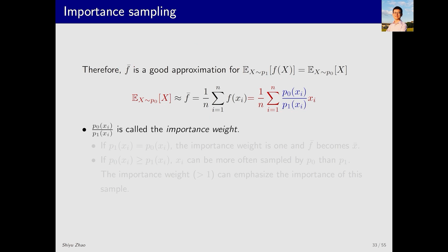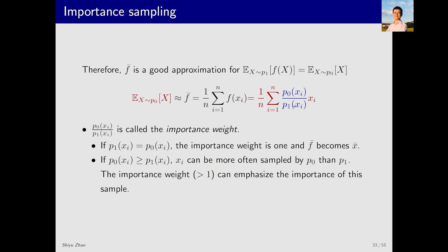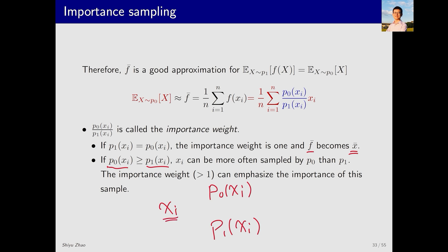If p0 is greater than p1 at some x_i, the importance weight becomes greater than one. Here is the intuitive explanation: if p0(x_i) is large, x_i has high probability under p0; but if p1(x_i) is small, x_i is rarely sampled under p1. Since we are trying to calculate the expectation under p0, we should give extra importance to x_i — it is rare under p1 but easy to sample under p0. Therefore the weight is greater than one, indicating higher importance.